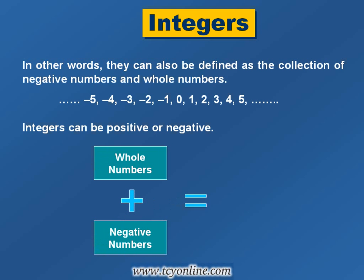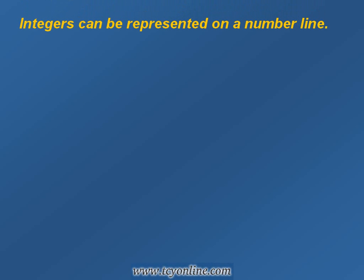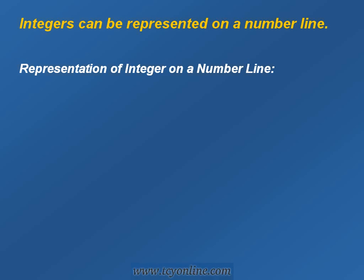Integers can also be represented on a number line. A number line is a line on which real numbers can be placed according to their value. Each point on a number line corresponds to a real number. The zero point is called the origin.